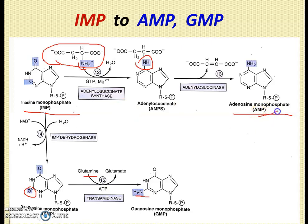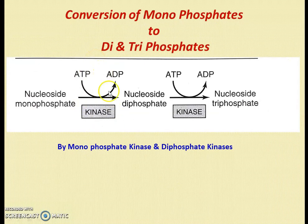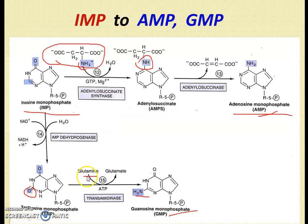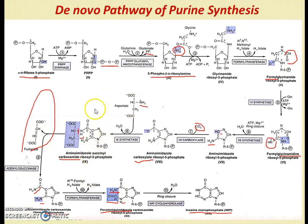The purine nucleotides AMP and GMP are further converted to diphosphates and triphosphates. Nucleotide monophosphates are converted to diphosphates by nucleoside monophosphate kinase, and diphosphates are converted to triphosphates by nucleoside diphosphate kinase. Understanding these core reactions helps you remember the entire purine biosynthesis de novo pathway.